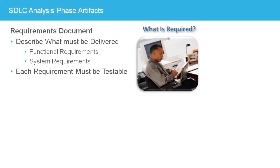The analysis phase produces a number of artifacts that guide the design phase. The most important artifact is the requirements document, which is often used as a contractual document of what the project will deliver. The requirements document holds functional and system requirements, which determine what needs to be implemented in the final product. Each requirement defines some aspect of the system's functions, behavior, performance, or interfaces. Requirements only state what the system must do — they never say how a feature will be implemented. And each requirement must be testable, so that it can be verified during validation.